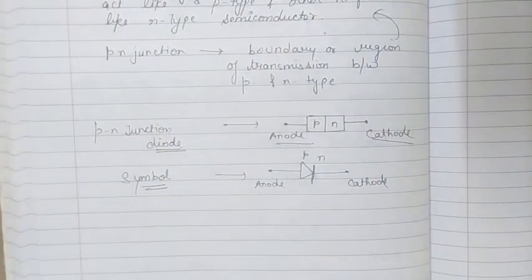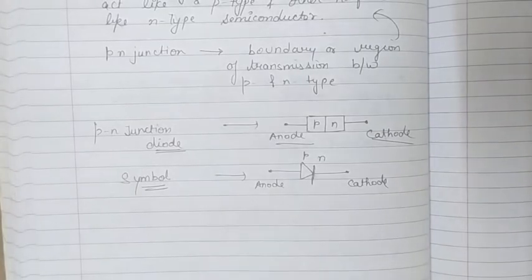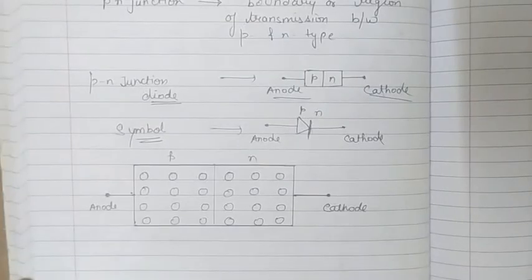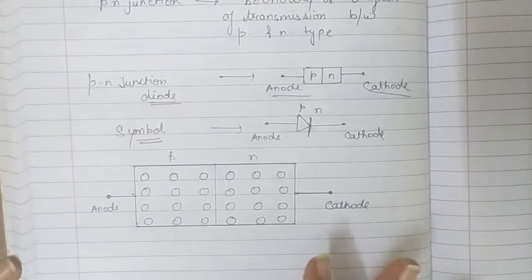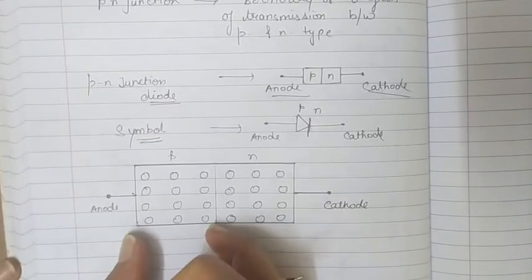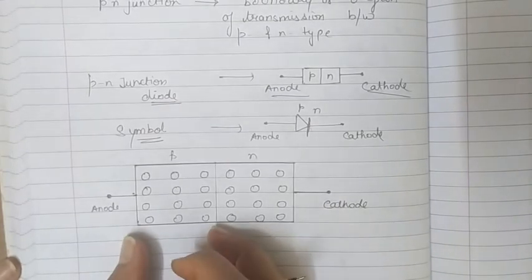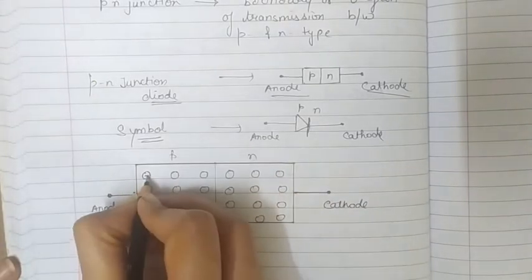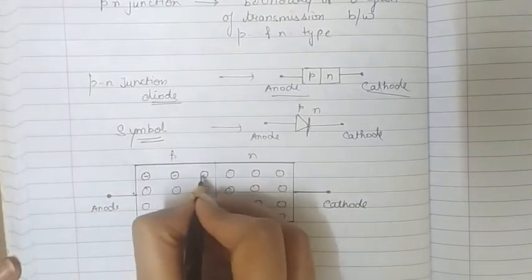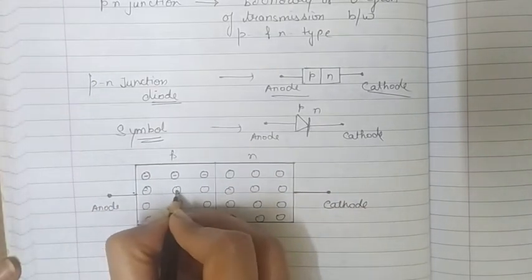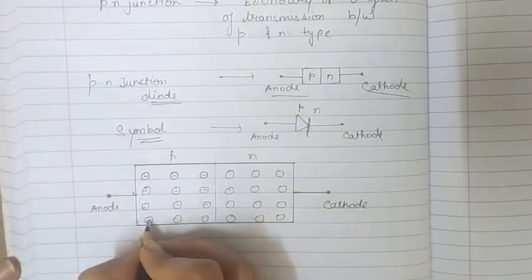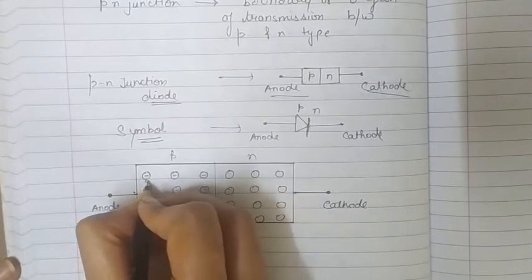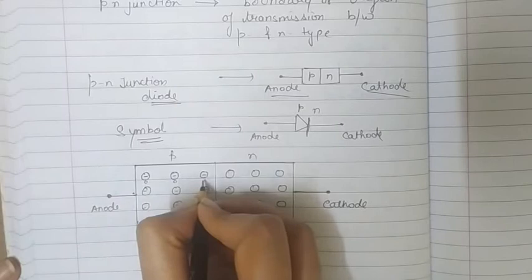Now let's see the configuration of the PN junction diode by making a diagram. On the p-side of the semiconductor we have acceptor ions and holes present with them.